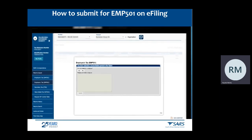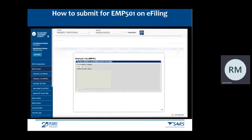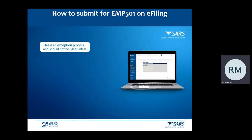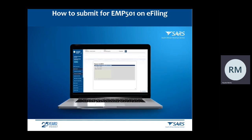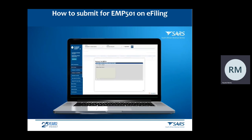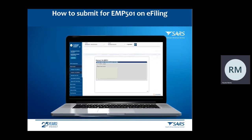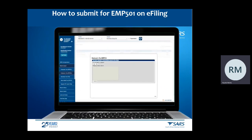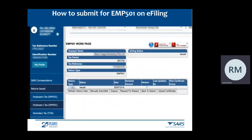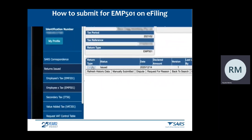Note: if you have selected a final reconciliation before the end of the filing period, this is an exception process and should not be used other than for liquidation, winding up the company, insolvency, estate cases, or dormant situations. The following screen will display and you will be required to confirm that you wish to continue and provide a reason why you are submitting the reconciliation before the end of the filing period. This will issue the return on the EMP501 work page.